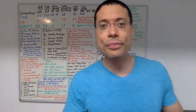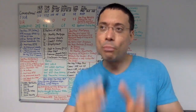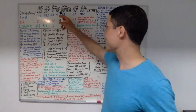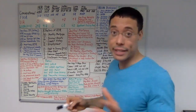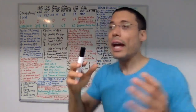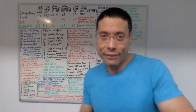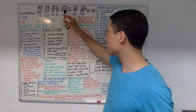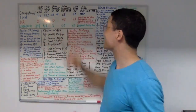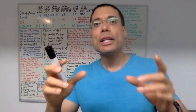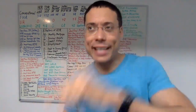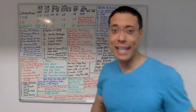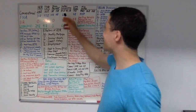Regarding seller concessions on a conventional loan: if the LTV is more than 90%, then the maximum seller concession is 3%. If the LTV is more than 75% but not more than 90%, the maximum seller concession is 6%. And if the LTV is 75% or under, the maximum seller concession is 9%.